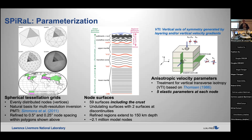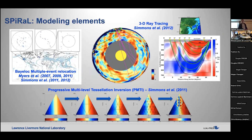Even though we use a spherical tessellation grid, the model is not spherically symmetric at all. It has built-in mantle stretching, undulations, and full crust — the same crustal units as Crust 1.0, so seven layers of hard rock directly built in. There are 59 surfaces. We take the high-resolution zones only down to about 150 kilometers, so only in the outer shell of the mantle. There are about 2.1 million spatial nodes.